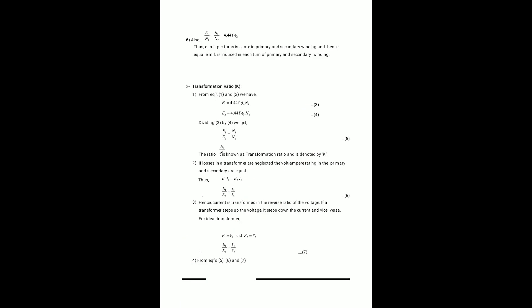The transformation ratio K is represented as K = N2/N1, based on the ratio of the number of turns of the secondary to the primary winding. The EMF ratio of primary to secondary winding also follows this transformation ratio.